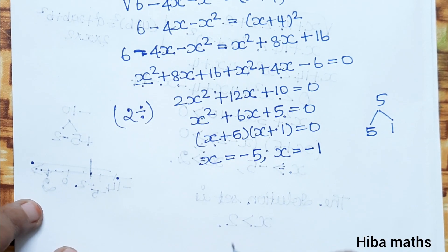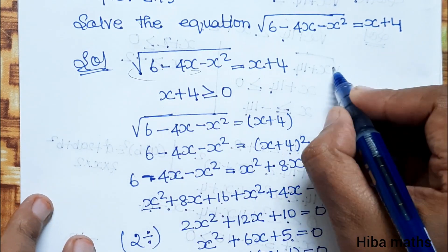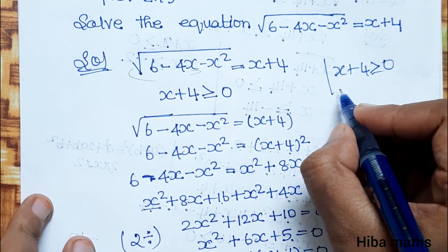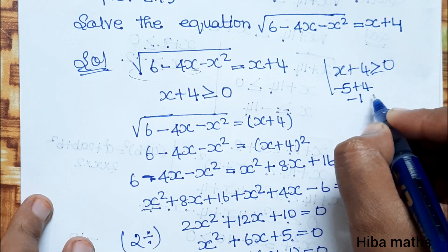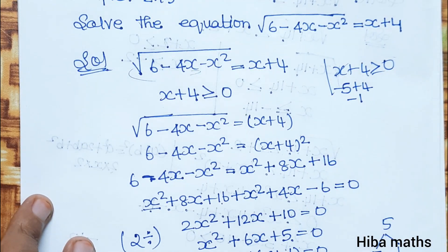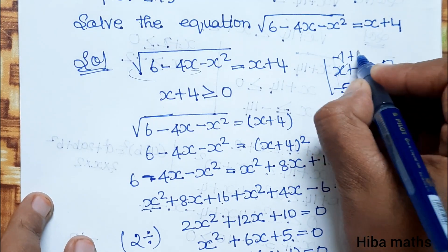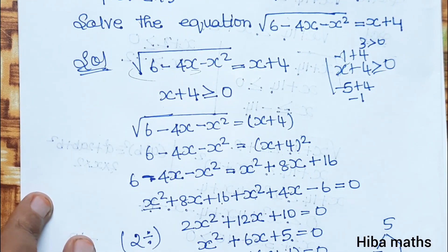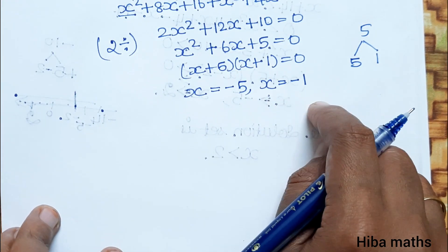So we have to find the final solution. For x equals minus 5: x plus 4 equals minus 5 plus 4 equals minus 1, which is less than 0, so this is rejected. For x equals minus 1: x plus 4 equals minus 1 plus 4 equals 3, which is greater than or equal to 0, so the solution is x equals minus 1.